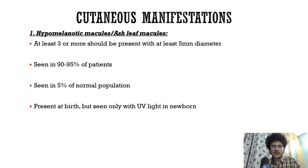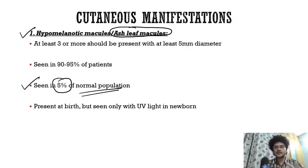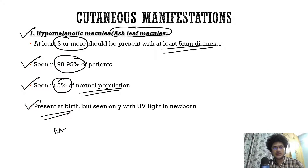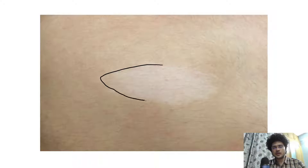The earliest and most common cutaneous manifestation is hypomelanotic macules, or ash leaf macules. Since they are seen in 5% of the normal population, at least three or more ash leaf macules, each at least 5mm in diameter, are required for significance. They are seen in 90–95% of tuberous sclerosis patients and can be detected even in the neonatal period under UV light.